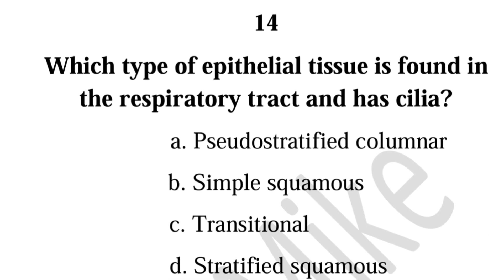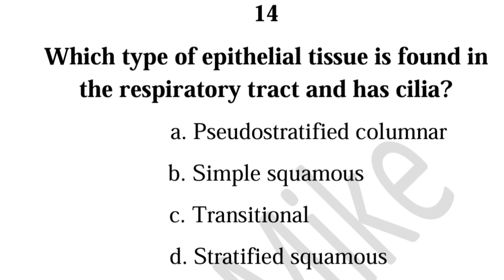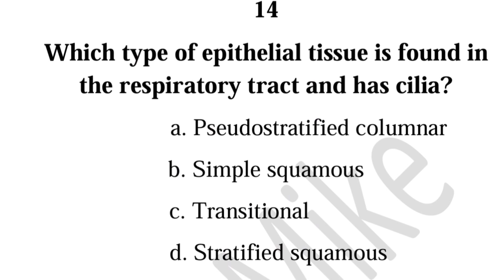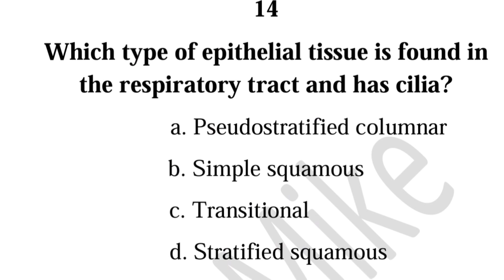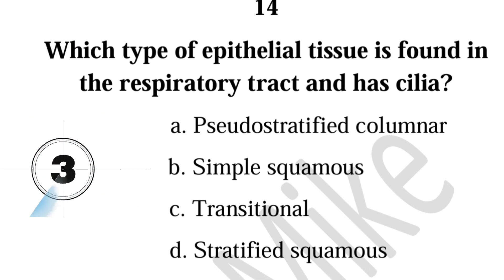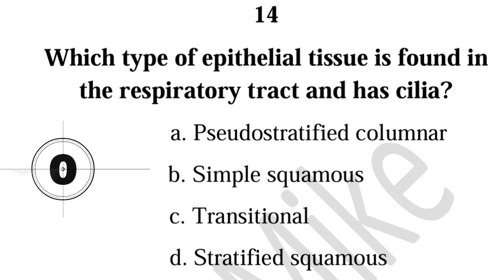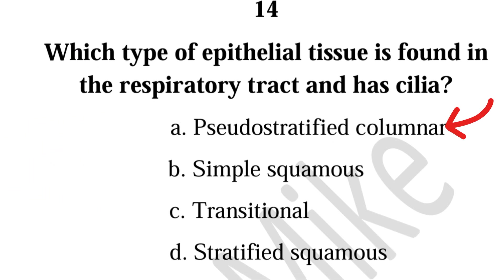Fourteen, which type of epithelial tissue is found in the respiratory tract and has cilia? Pseudo-stratified columnar.